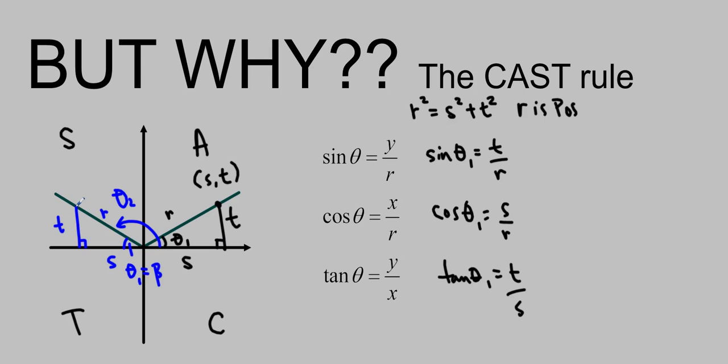And if I find this coordinate, it's actually negative s, t, because I'm going in the negative direction, and that gives us our x and our y. So x is negative s, and y is t. So again, using these definitions, now we're in quadrant 2.